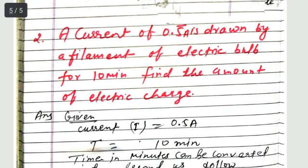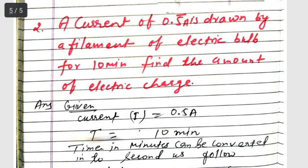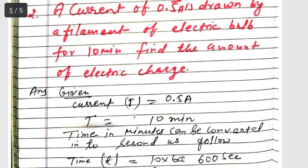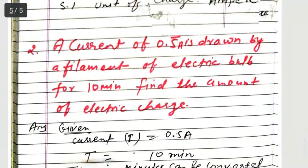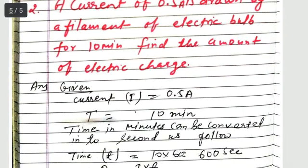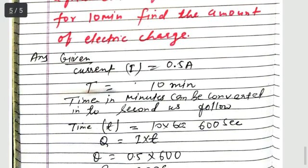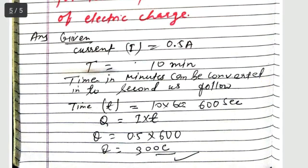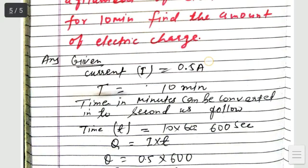The current is given: I = 0.5 A. The time is not in seconds, the time is in minutes, so friends, time in minutes can be converted into seconds. Time t = 10 minutes × 60 = 600 seconds. Q = I × t, so Q = 0.5 × 600. Q = 300 coulombs.